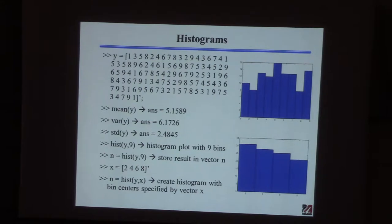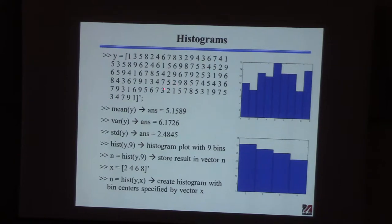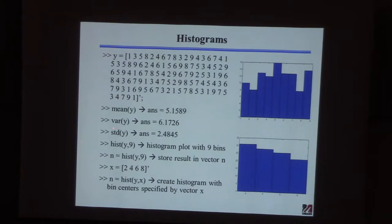Here are a few things you can do in MATLAB. I just typed random numbers between one and nine to create this dataset. I created a vector called Y — looks like about 60 values. If you want to calculate the mean, you just issue the command mean(Y). You can do the same thing to calculate the variance and the standard deviation. This is much more convenient than doing it by hand, where you'd have to calculate the mean, subtract it from each value, square them, and sum — not very fun.